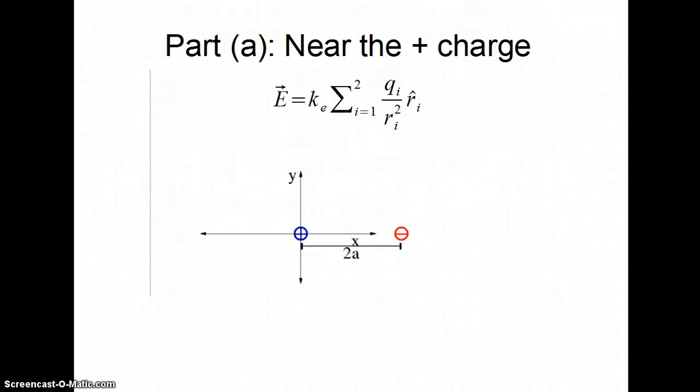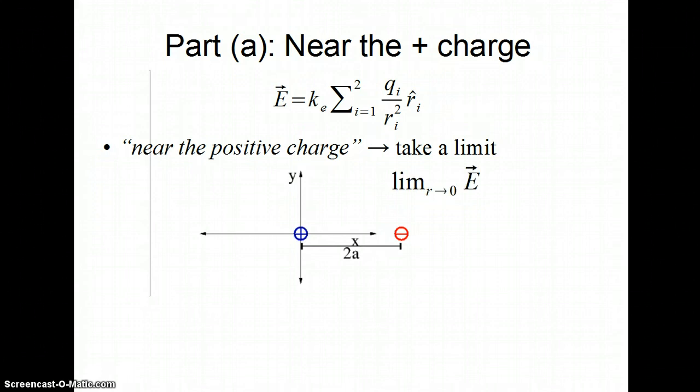We draw our picture and coordinate system near the point charge. Near generally means, when a physics teacher says it, take a limit. The easiest limit to take was the limit as R, the radial coordinate in this system, goes to zero. In that limit, the field due to the positive charge is very large. As it goes to zero, it gets infinite, so the negative charge becomes irrelevant. I can just write down what my field would be around the one point charge, and I'm done. That is a good answer.